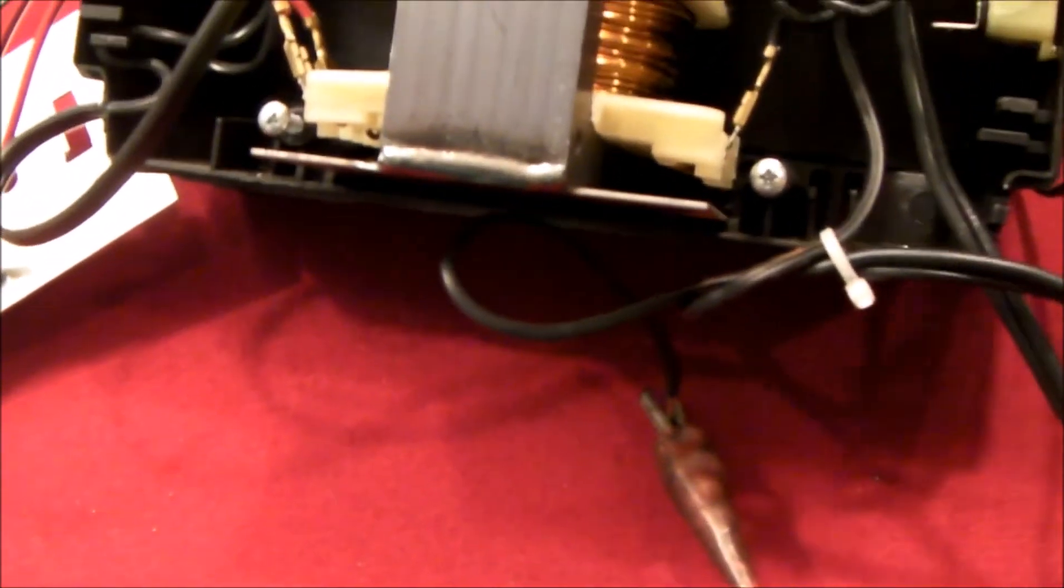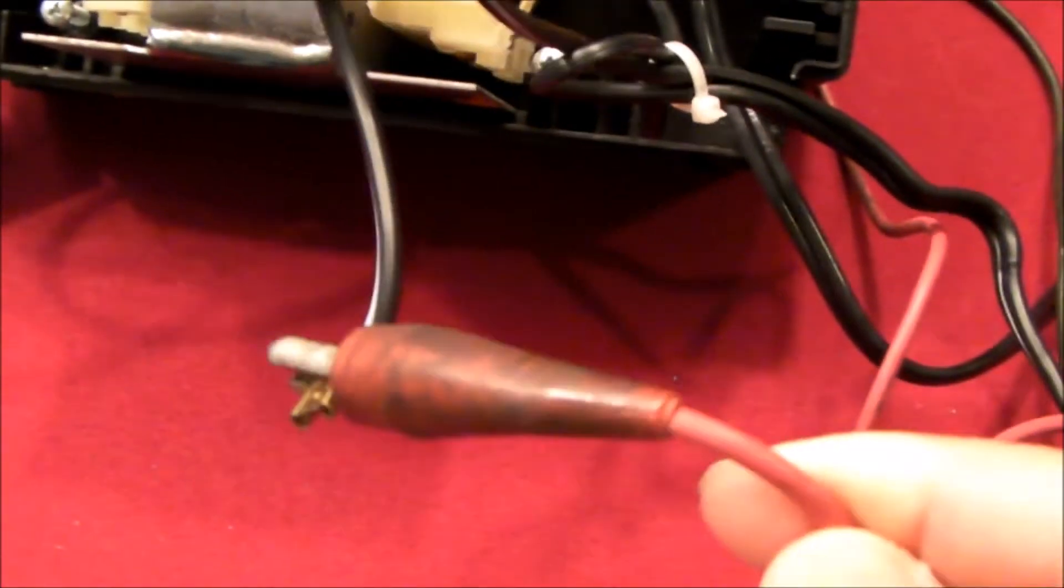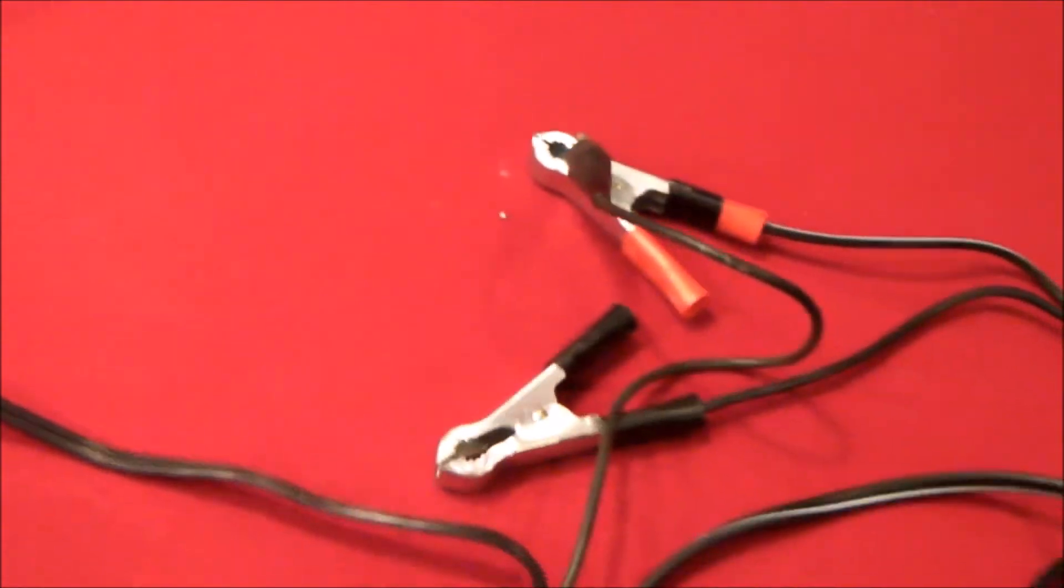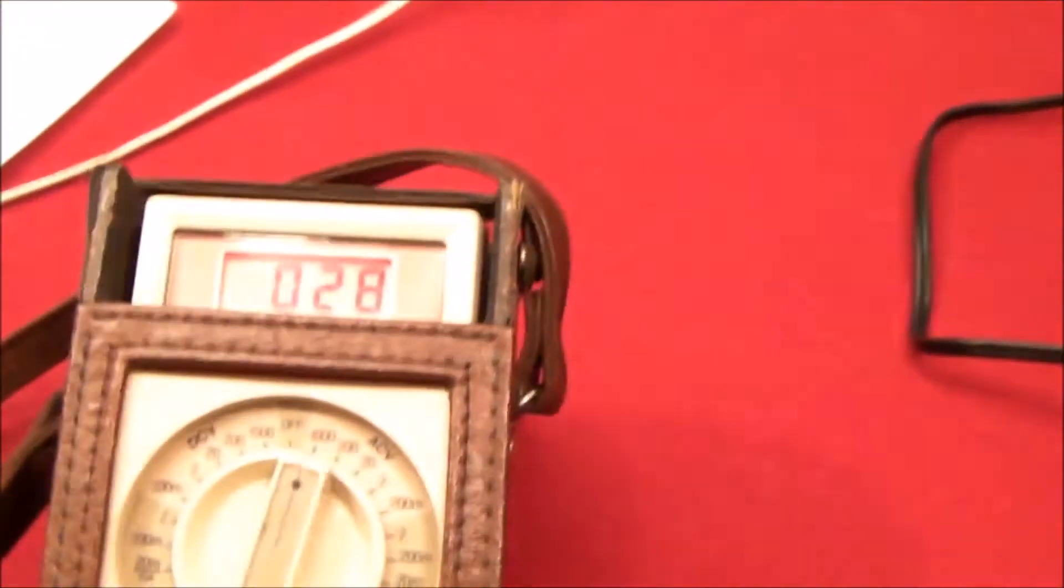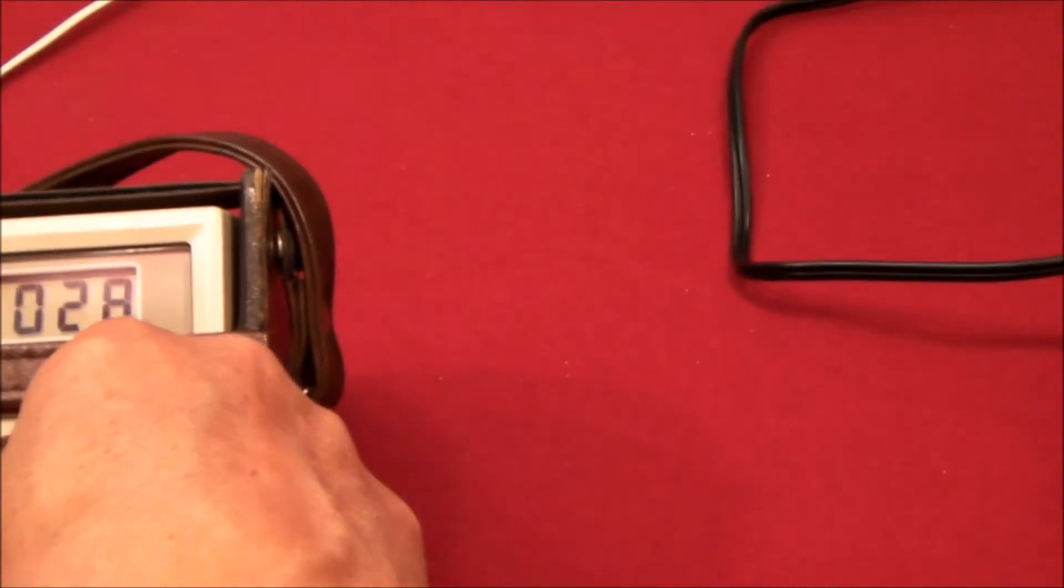Look again to see if I clip my meter to this lead that goes to the control board, to the red alligator clip. You can see that I've got resistance, it's almost a direct short, so I have continuity.